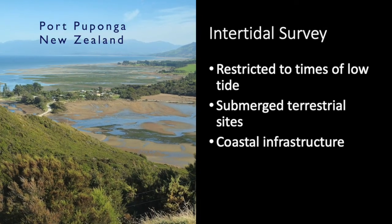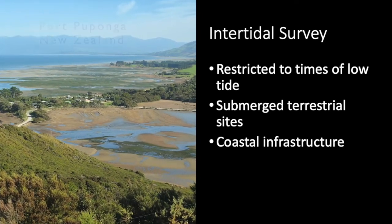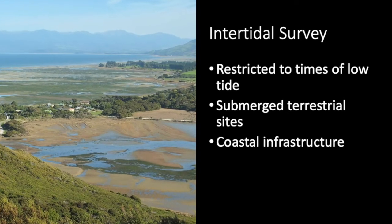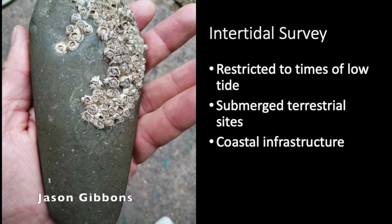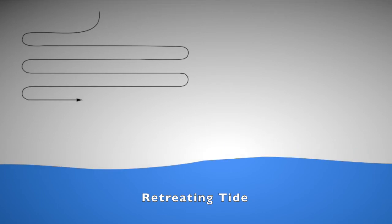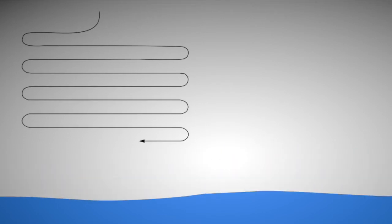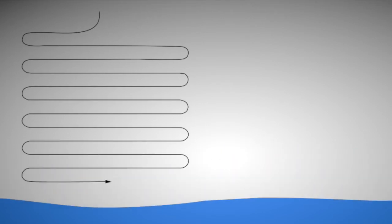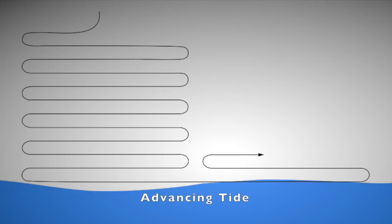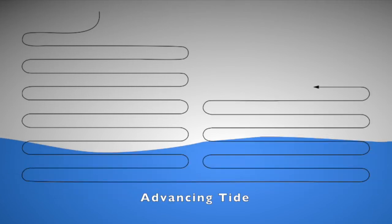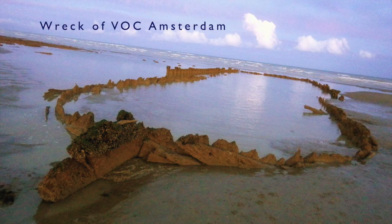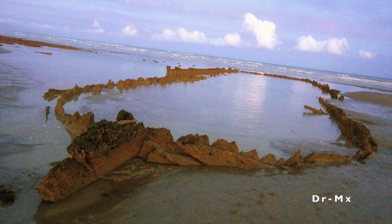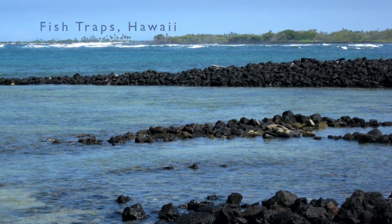Intertidal survey is kind of a compromise between terrestrial and underwater survey. It involves searching for archaeological traces that are flooded at high tide, but exposed to the air at low tide. Archaeologists are involved in sort of a race against time when they do intertidal survey, with search transects that advance as the waters are retreating, and then have to retreat as the waters rise. Intertidal surveys are important not only for detecting flooded village sites, but also coastal installations, sunken ships, and features like fishing weirs.